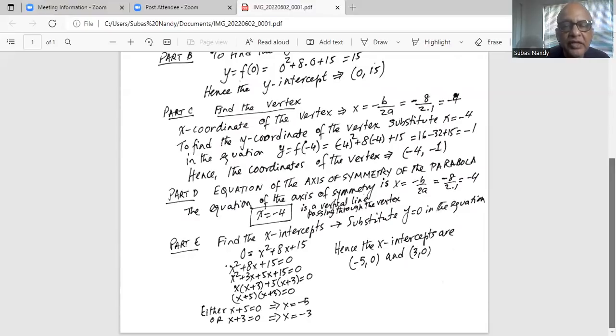So what are the two x-intercepts? One of them is (-5, 0), and the other one is (-3, 0), not (3, 0) as I've written here, which is a mistake. It should be (-3, 0). So the two x-axis intercepts, where the parabola cuts the x-axis where y is always 0, are (-5, 0) and (-3, 0).